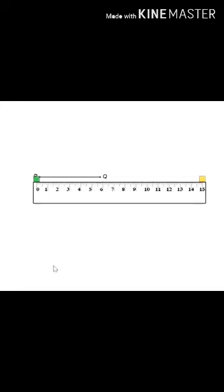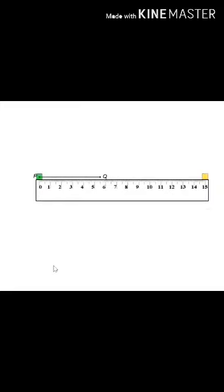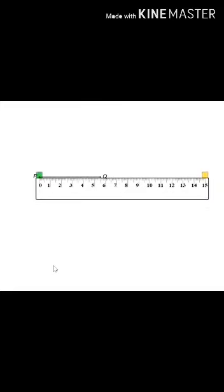The zero mark on the scale is at one end, point P of the line segment. We now read the mark on the scale which is at the other end, point Q of the line segment.